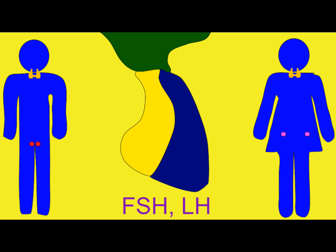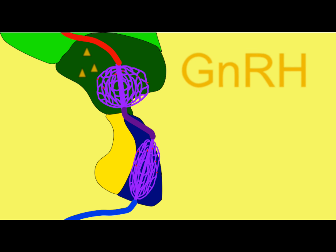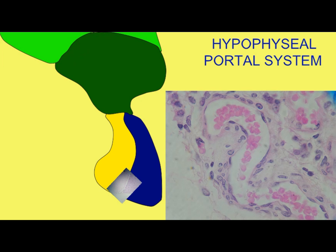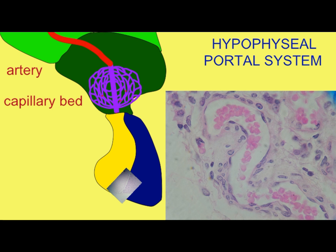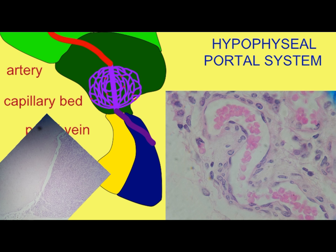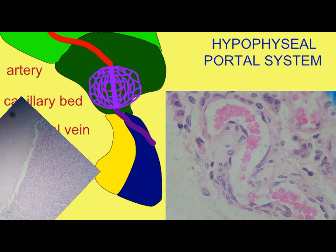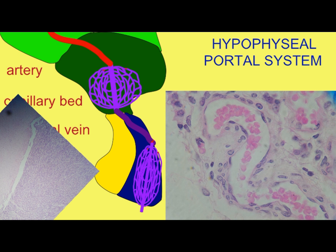Both FSH and LH are released from pituitary cells known as gonadotropes, and are stimulated by the hypothalamic hormone GnRH. It is a faster pulsating release of GnRH from hypothalamic neurons which results in the secretion of LH.